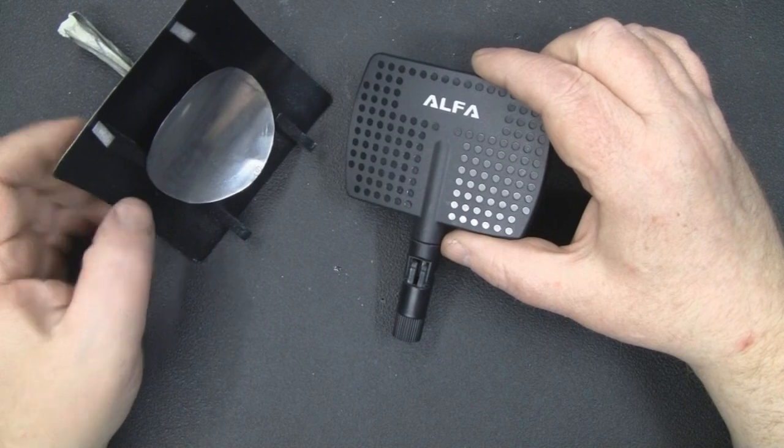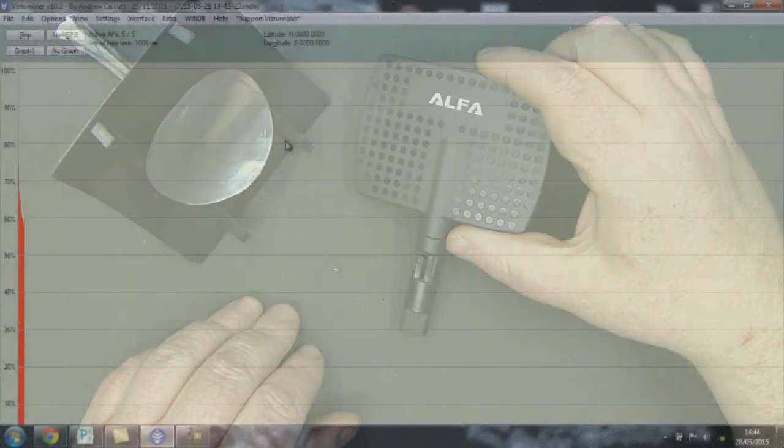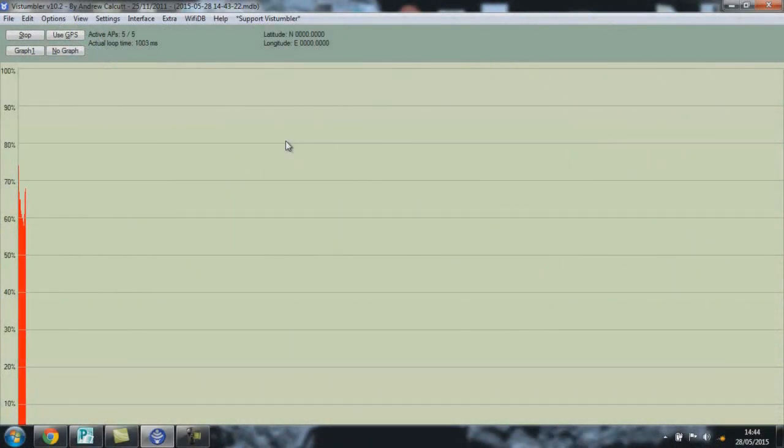I've got the alpha patch antenna on. Both these antennas are directional so I'm just trying to focus in the alpha patch antenna first to see what the best signal is I can get out of this. It's probably around there, just under the 70% mark. That gives us a good record. I'll swap this out now and put the parabolic antenna on.